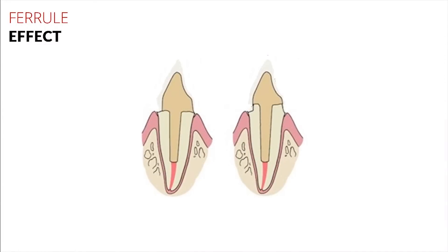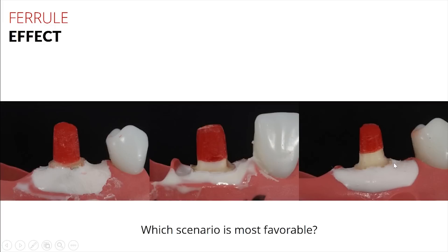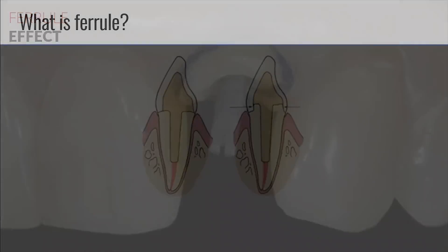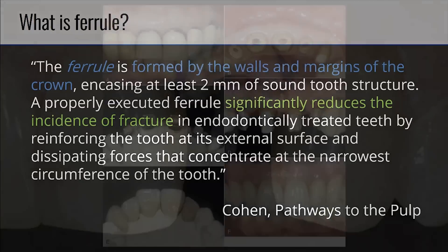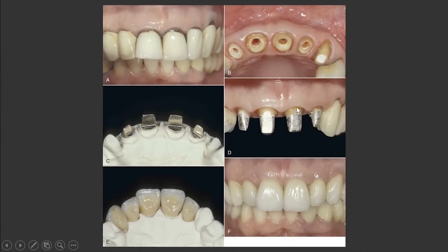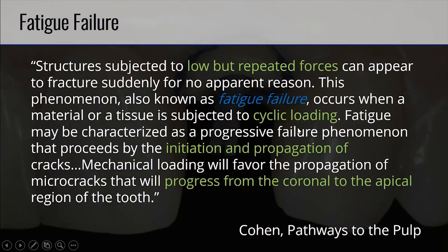When we talk about ferrule, we're referring to the height of this natural tooth structure from the crown margin to where your post or post and core essentially starts. The ferrule is formed by the walls and margins of the crown encasing at least two millimeters of sound tooth structure. The idea of having a ferrule is that it significantly reduces the incidence of fracture in endodontically treated teeth.